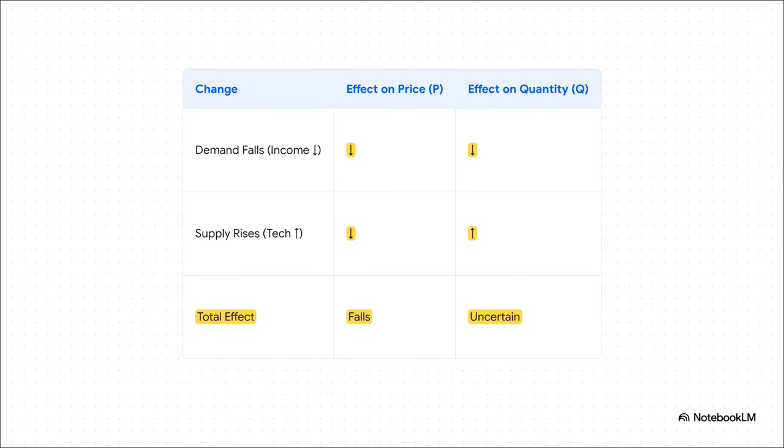So when we add it all up for the total effect, check out the price column, down and down. It's a no-brainer, right? The price is definitely going to fall. But now look at the quantity column. We've got a down arrow fighting an up arrow.